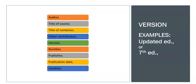If the source is a version of a work released in more than one form, identify the version in your citation. Books are usually issued in versions called editions. If no edition is mentioned, you can assume it's a first edition — in that case, don't use this element.